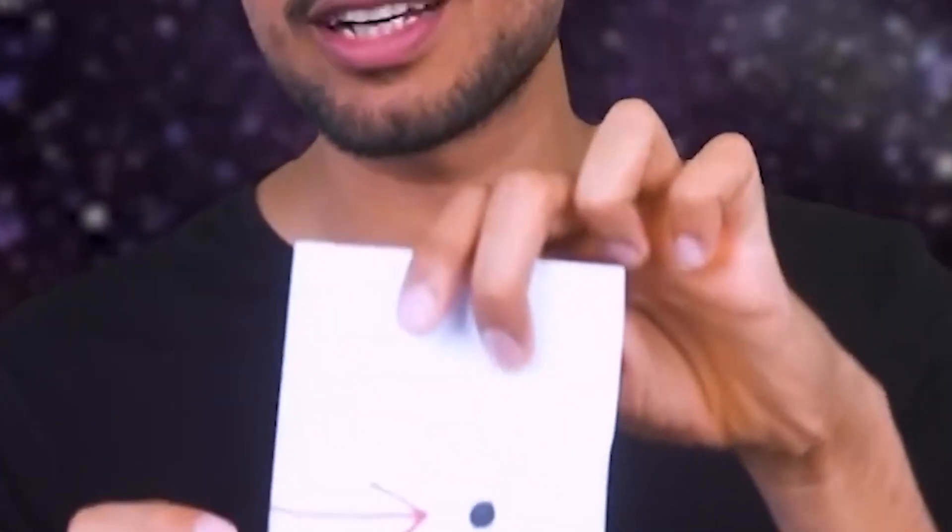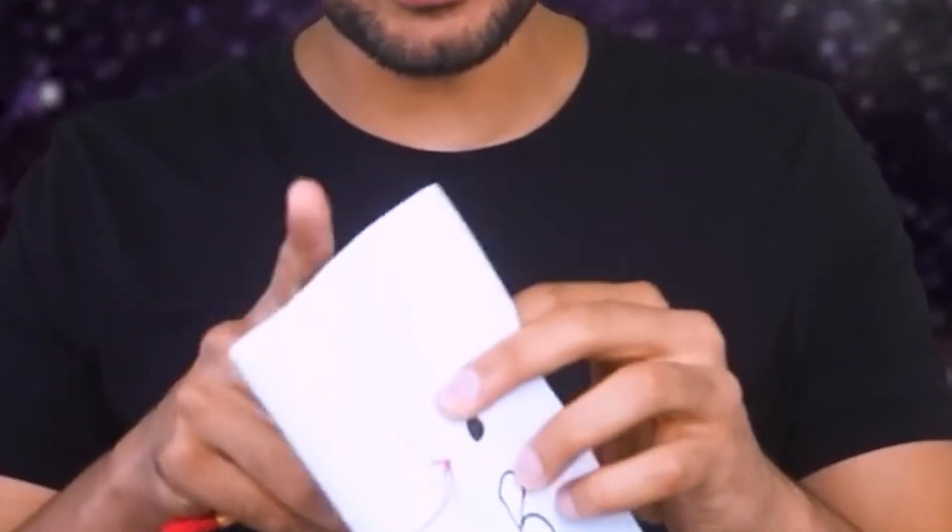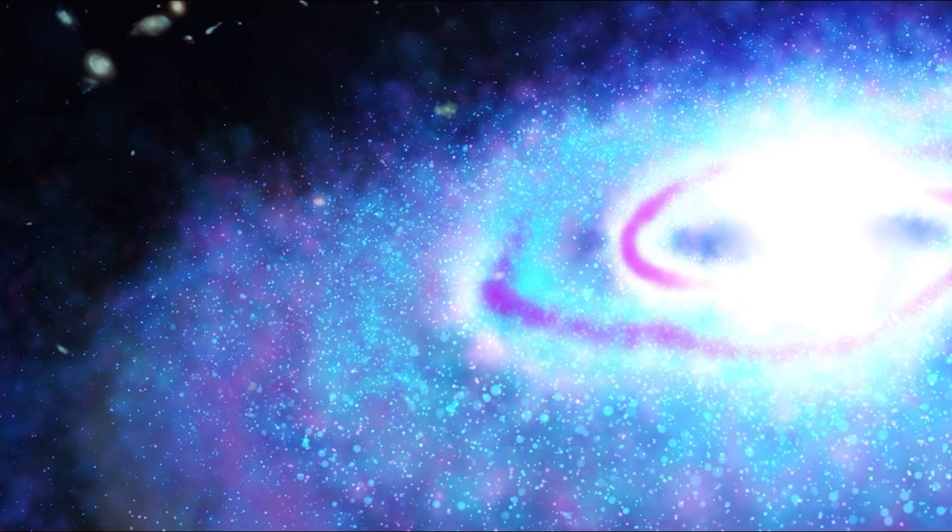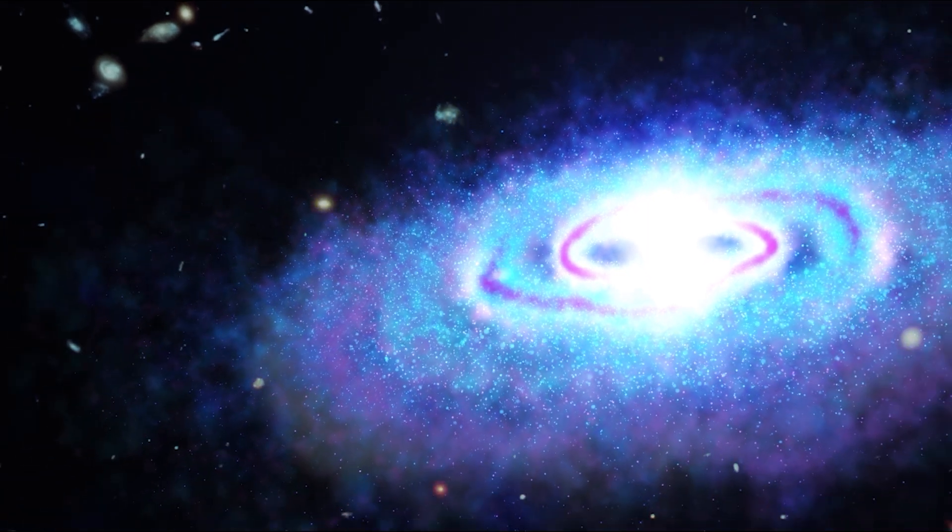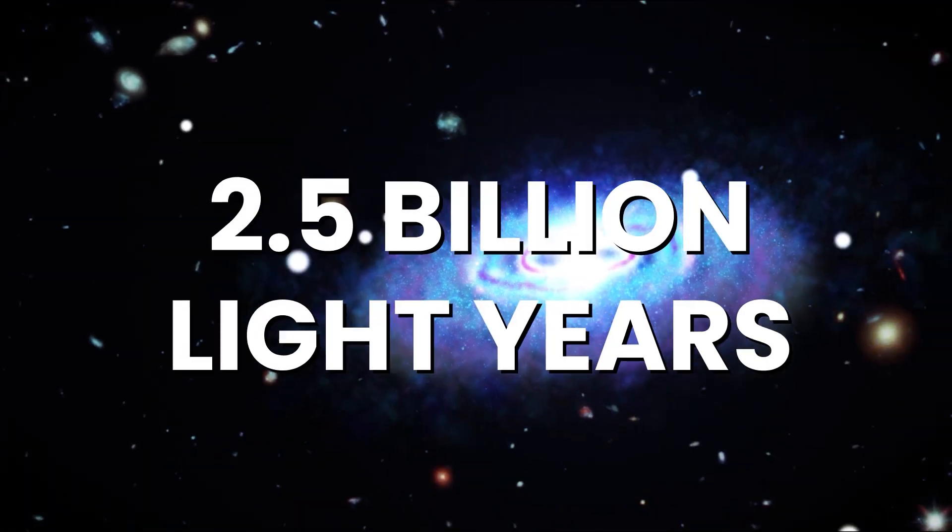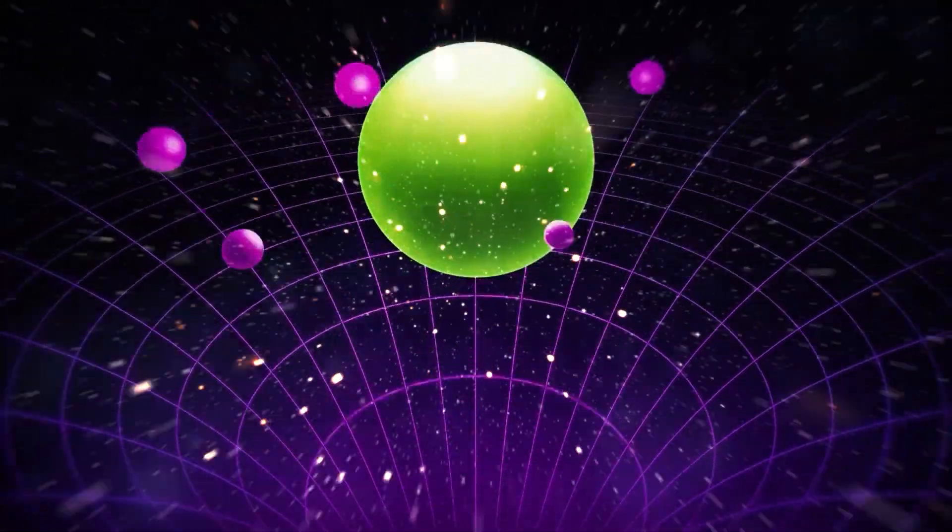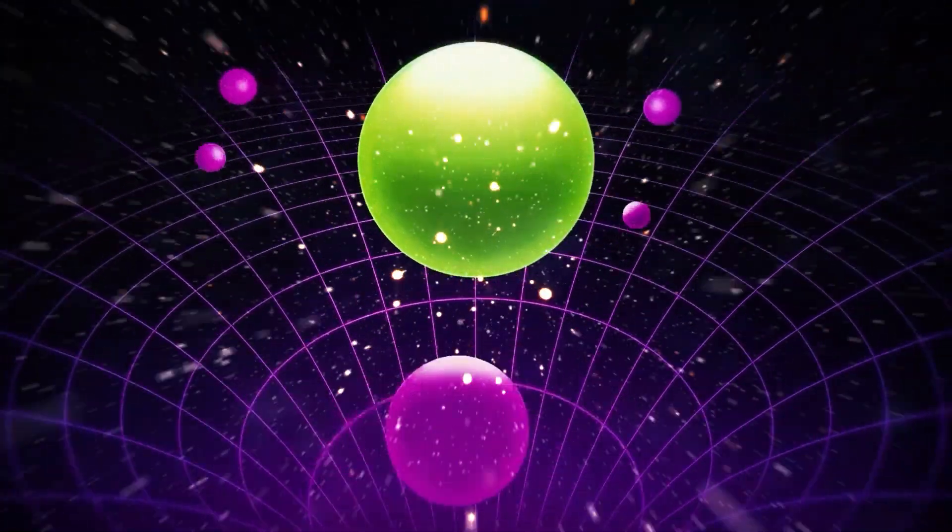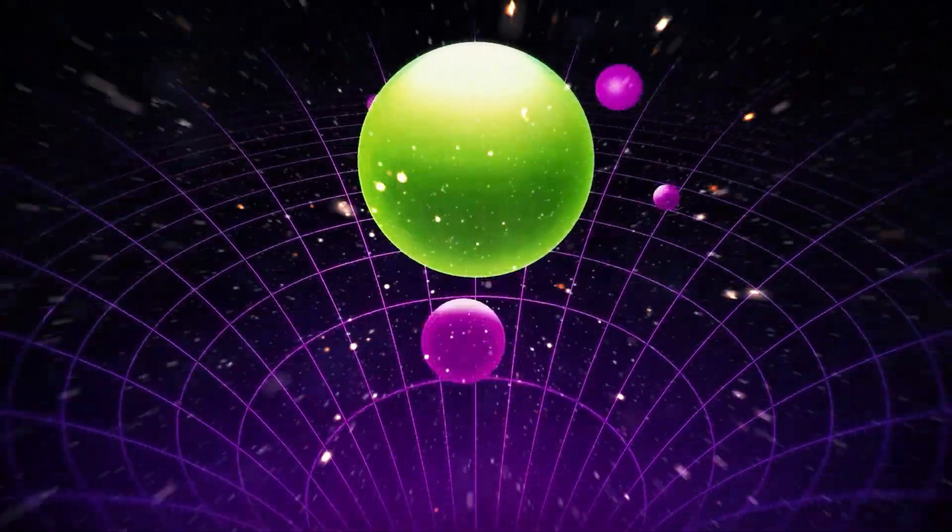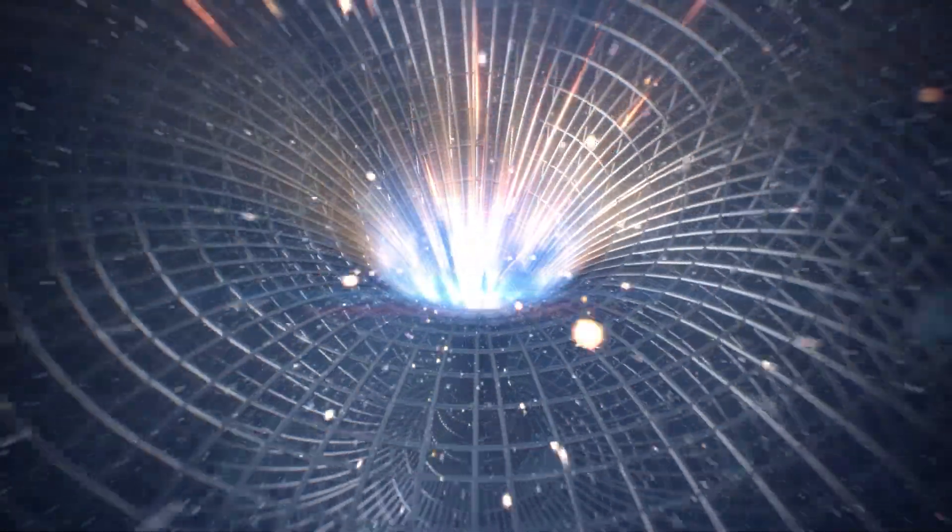Wormholes do the same thing in our three-dimensional universe. We know that the shortest path from the Milky Way galaxy to the Andromeda galaxy is 2.5 billion light-years. If our 3D space is curved or bent in the 4D space, then it is possible to find a shorter and better shortcut.